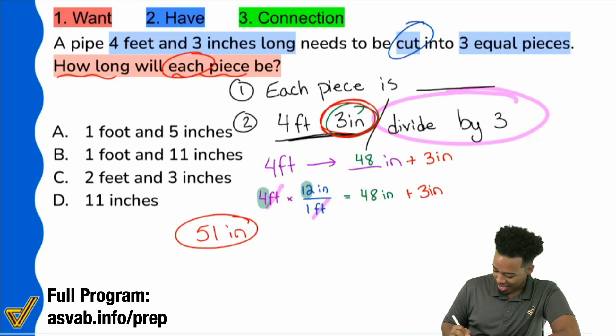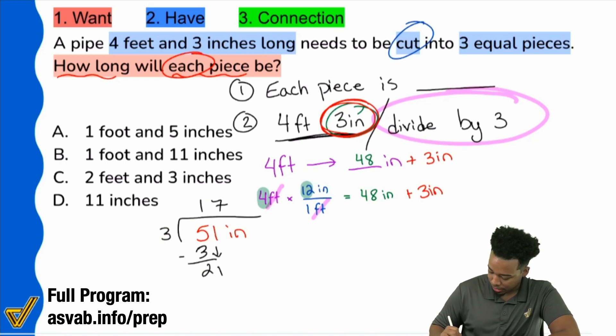So we're going to go ahead here and take this and divide three into that. And we have three into five that goes once. And then we have the 21. Three goes into 21 seven times. And there it is. That's going to be a clean division. And so we have 17 inches for each piece.